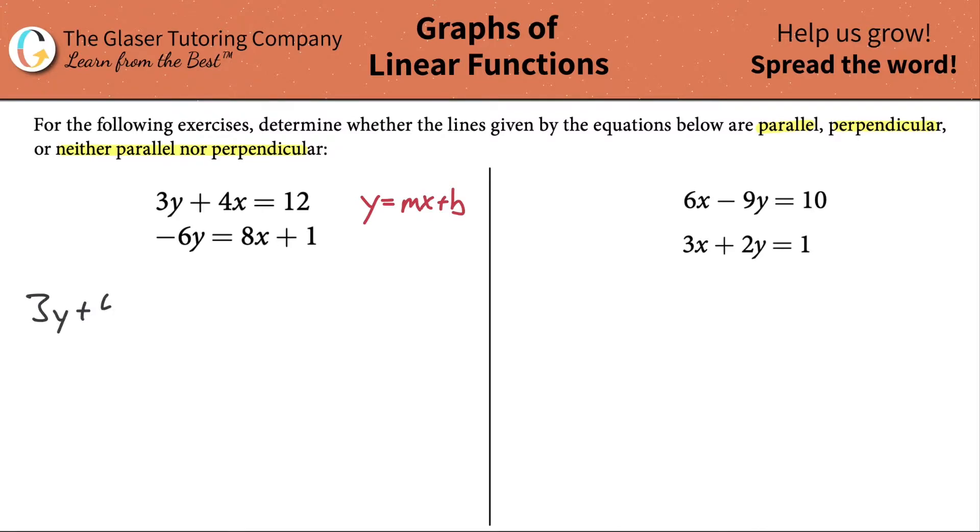We got 3y plus 4x equals 12. We want to solve this for y. Subtract the 4x from each side. Then it's going to be 3y equals negative 4x plus 12. I'm putting the x first because I'm trying to match it to that form. Divide each side by 3, and we can distribute this 3 over each of the terms in the numerator. So it's now negative 4 thirds x plus 4.